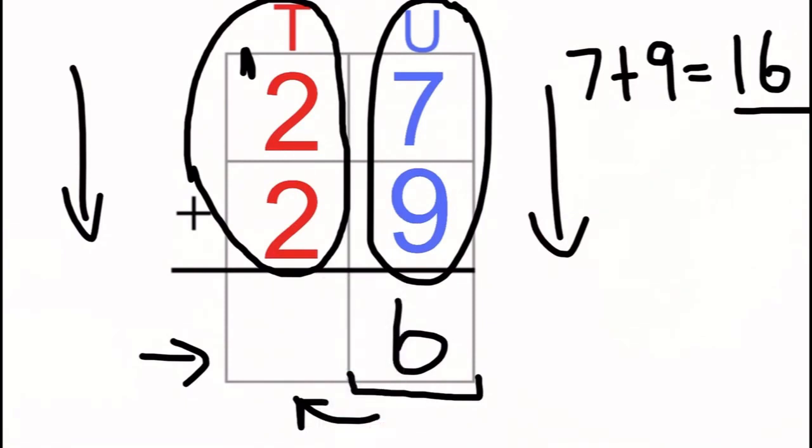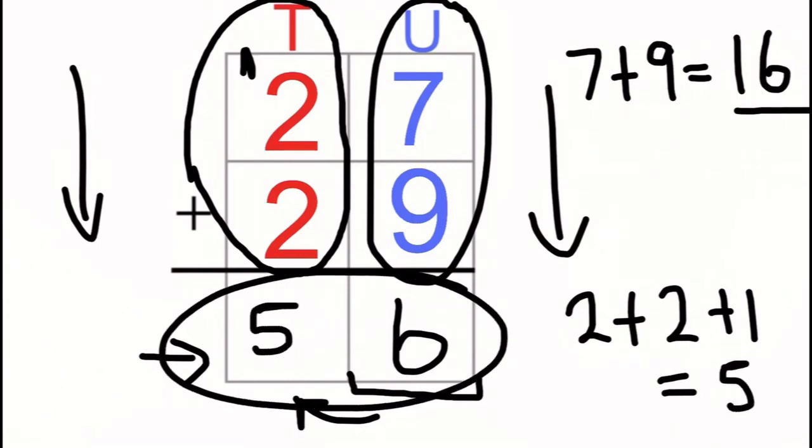For the tens column, we have to do two plus two plus one, which we know is five. So we can see under here that the answer to our sum is 56.